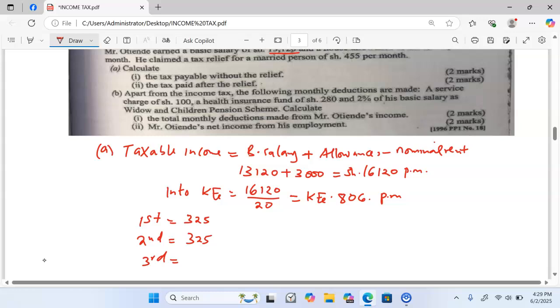And in the third bracket, this is where our money lies. We call it the remaining. And therefore, we have to add the amount we have taxed in the first and the second, then less from 806. So, we are going to have 806 minus 325 times 2. 325 times 2 will give us 650. 806 minus 650 will give us 156.